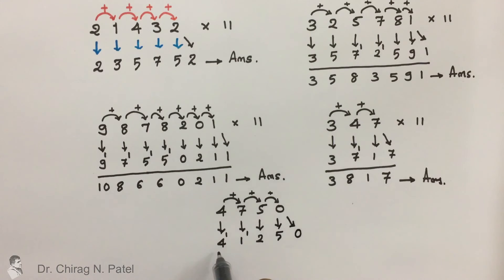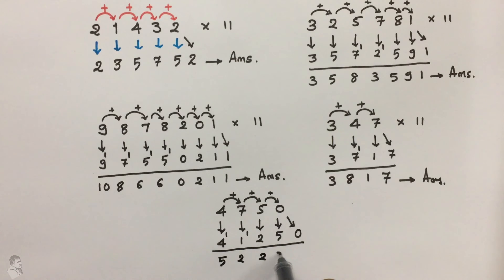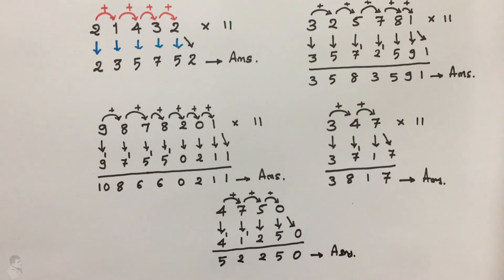Then 5 plus 0 is 5, and write down 0 as it is. Now make a summation: 4 plus 1 is 5, 1 plus 1 is 2, then 2, 5, 0. So this is the answer. Likewise, you can find out the multiplication of any number with 11 within a few seconds.